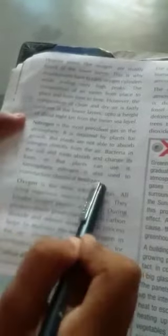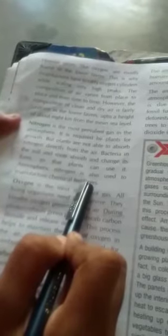Bacteria in the soil, bacteria present in our soil and roots absorb and change its form. Bacteria change the form of the nitrogen and after that plant can use it. So atmospheric nitrogen is also used to manufacture. Manufacturer means making goods on a large scale and chemical fertilizers that is useful for the growing of the plants.